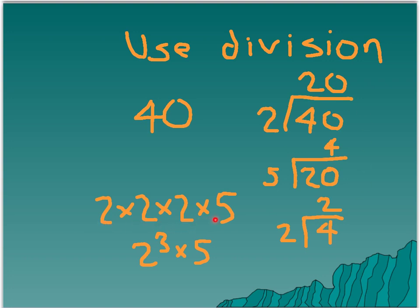So that's the prime factorization of 40: 2 times 2 times 2 times 5, or 2 cubed times 5 — just another way to write that. These had to be in order. Let's check: 2 times 2 is 4, times 2 is 8, times 5 is 40. So 2 cubed times 5 is the prime factorization of 40.